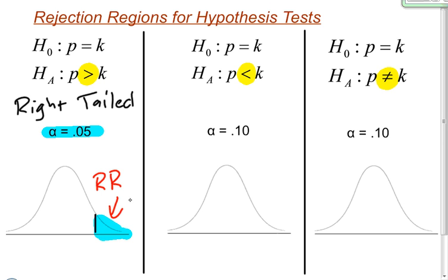In order to make this rejection region useful, we need to find the z-score that cuts off this rejection region. The z-score is based on alpha. Alpha, the significance level, equals the area of the shaded region — 0.05. If 0.05 of my area under the curve is to the right of this z-score, that means 95 percent is to the left. So now I know 95 percent is to the left and 5 percent is to the right, which makes my rejection region. I can use my calculator to figure out the z-score that cuts it off.